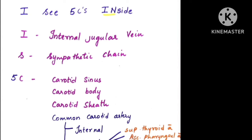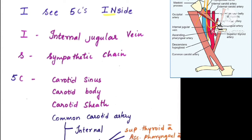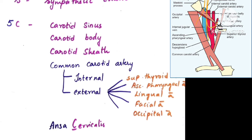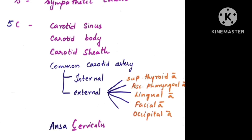You can use this mnemonic for remembering the contents of the carotid triangle: 'I see five C's inside.' I stands for internal jugular vein. S stands for sympathetic chain — that is the cervical sympathetic chain. The five C's are: carotid sinus, carotid body, carotid sheath, common carotid artery — which divides into internal and external carotid artery with five branches (superior thyroid artery, ascending pharyngeal artery, lingual artery, facial artery, and occipital artery) — and ansa cervicalis.